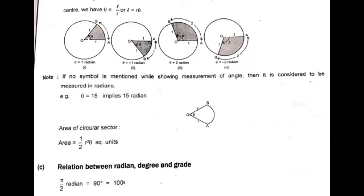The third system is radian measurement, which is commonly used. The angle subtended at the center of a circle by an arc whose length is equal to the radius of the circle is called a radian. Since the circumference of a circle of radius 1 unit is 2π, one complete revolution of the initial side subtends an angle of 2π radians at the center.